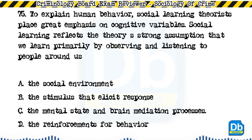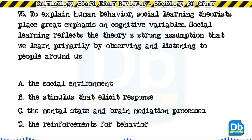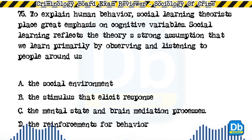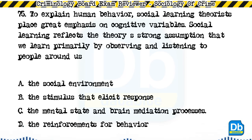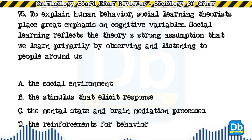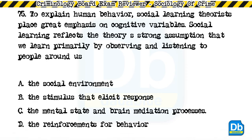Question 75: To explain human behavior, social learning theorists place great emphasis on cognitive variables. Social learning reflects the theory's strong assumption that we learn primarily by observing and listening to people around us: a) the social environment, b) the stimulus that elicits response, c) the mental state and brain mediation processes, d) the reinforcements for behavior. The answer is A, the social environment.